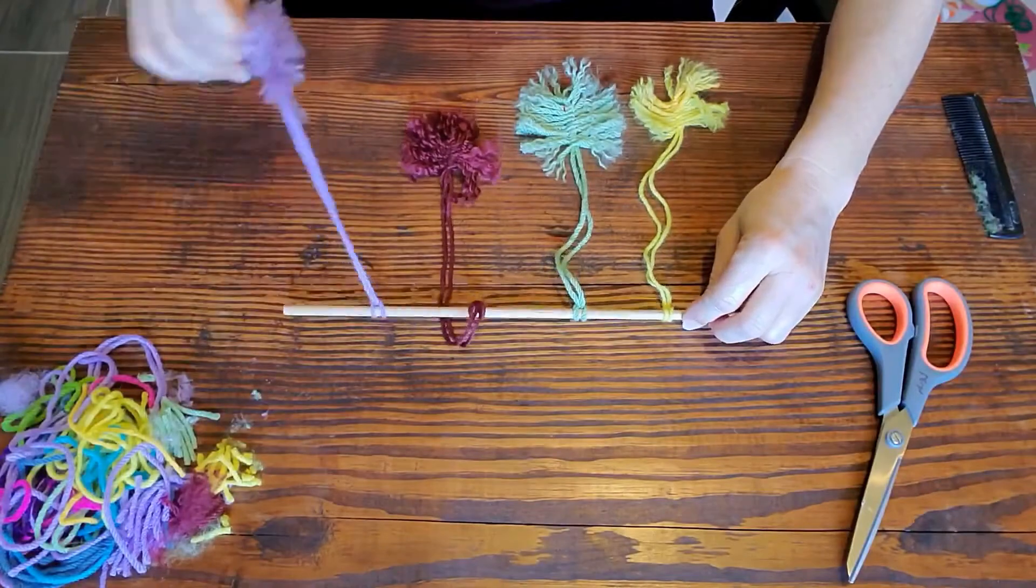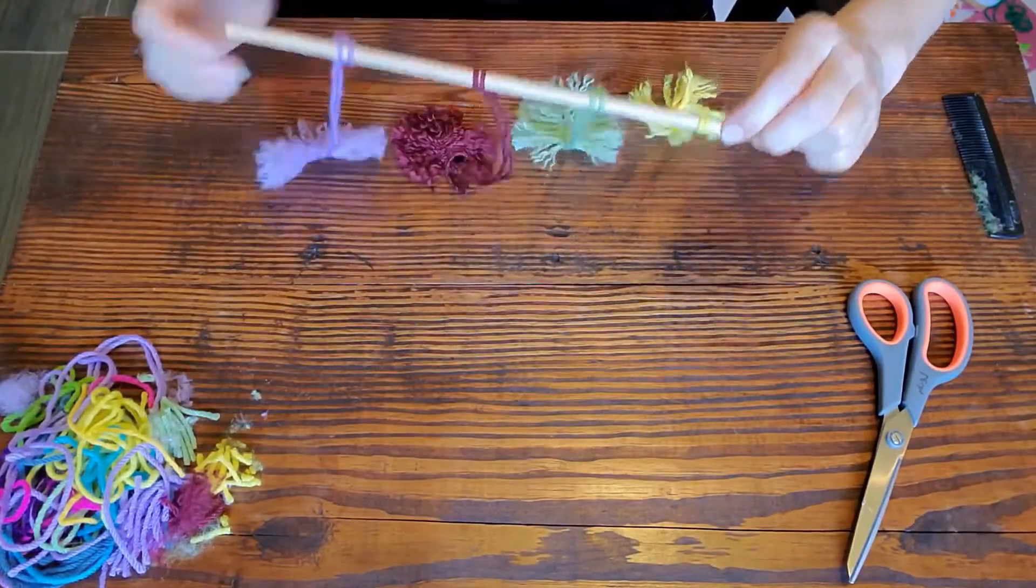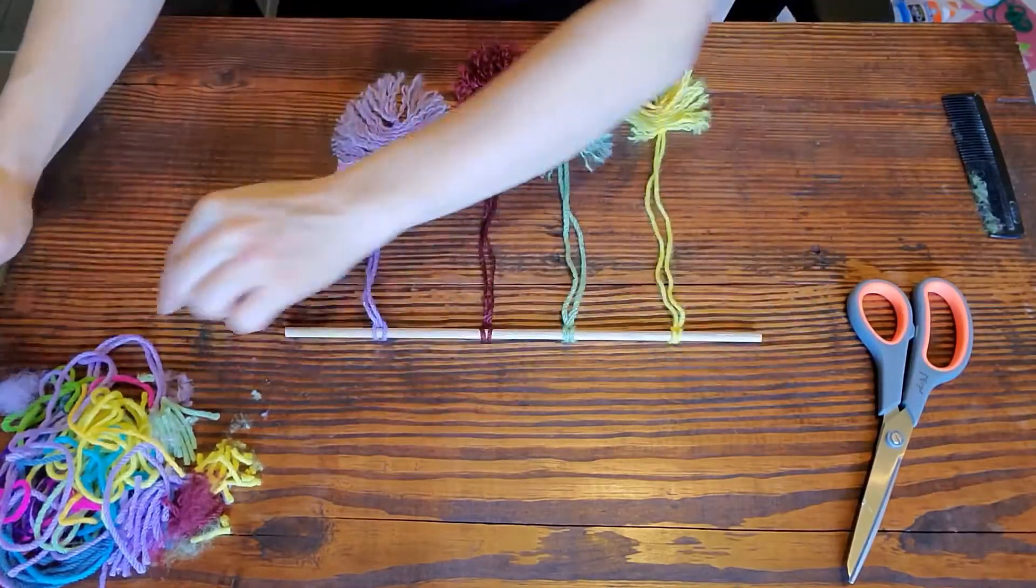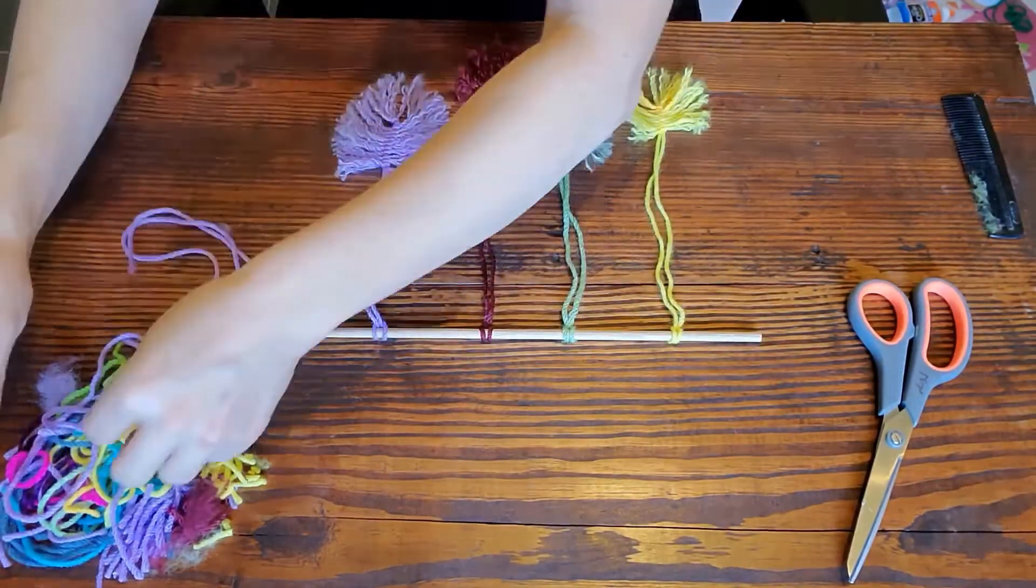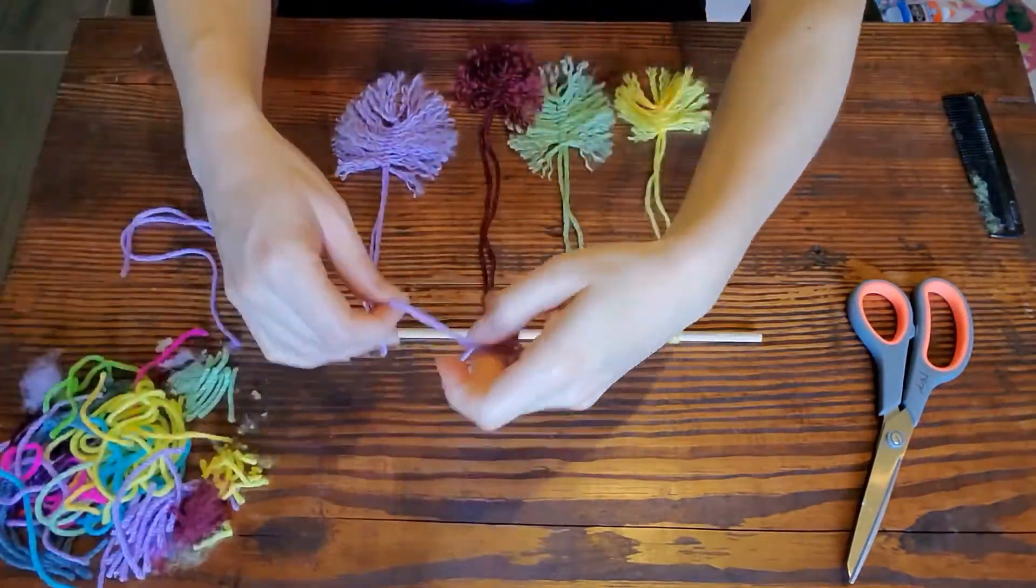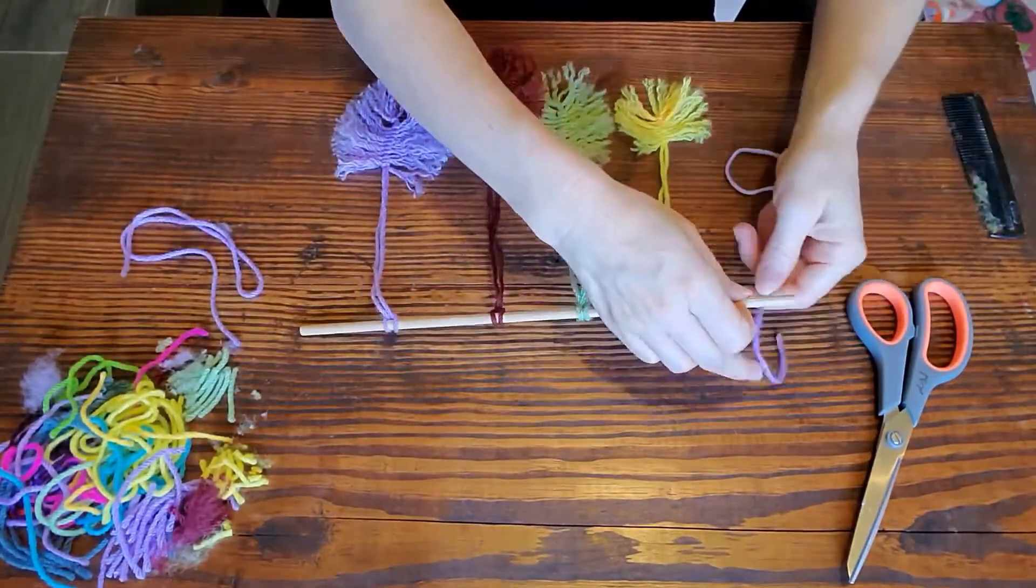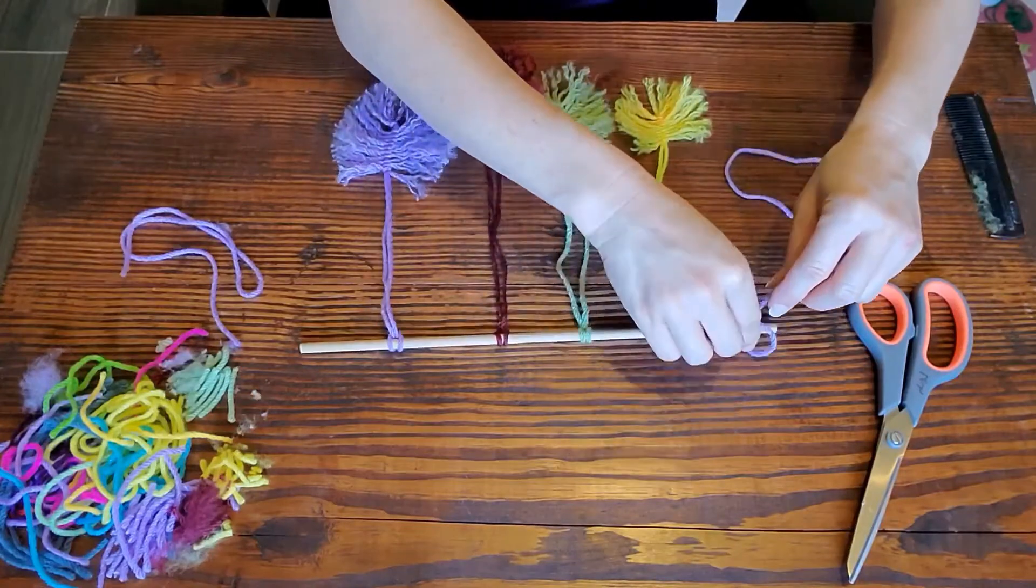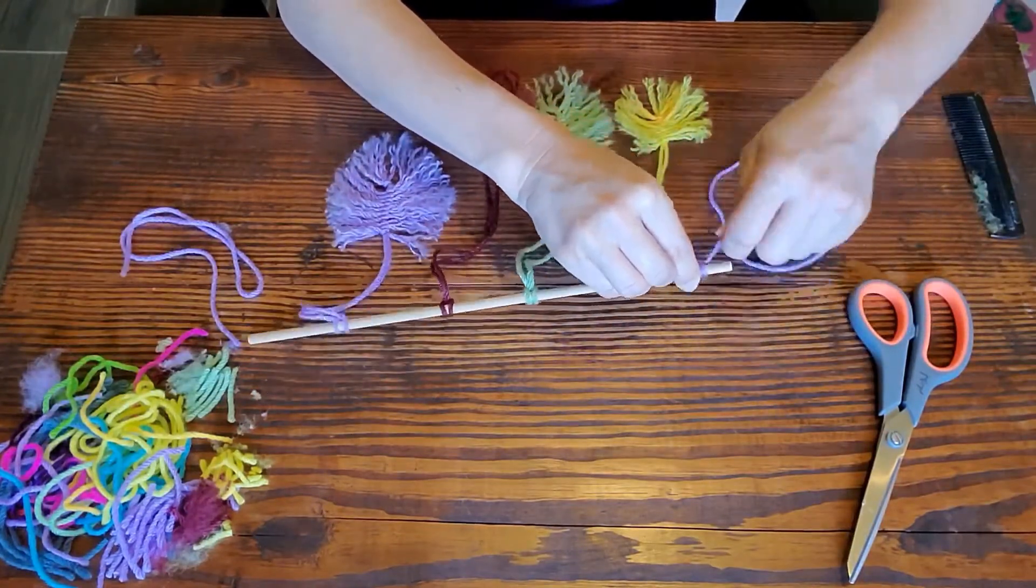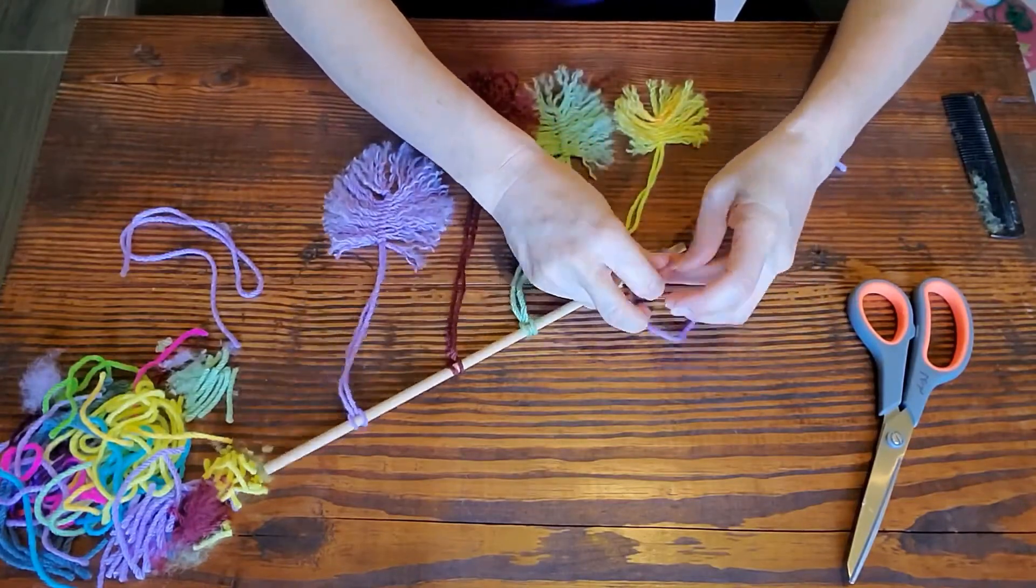And then the very last thing you want to do is make the string at the end. So you can pick your longest piece of yarn. Or if you don't have a really long piece of yarn, that's okay. I'm going to tie two of mine together. So first thing I want to do is just wrap it around. I'm going to wrap it around a couple of times and tie it together.